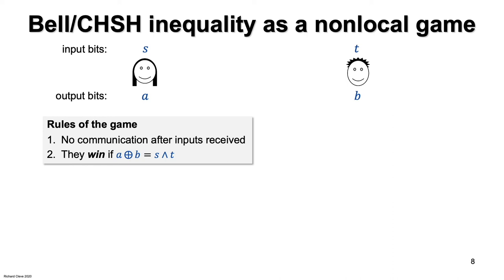This equation is just a condensed way of specifying this table. When the inputs are 0 and 0, the XOR of the two output bits should be 0. And the same for the cases of inputs 0, 1 and 1, 0.